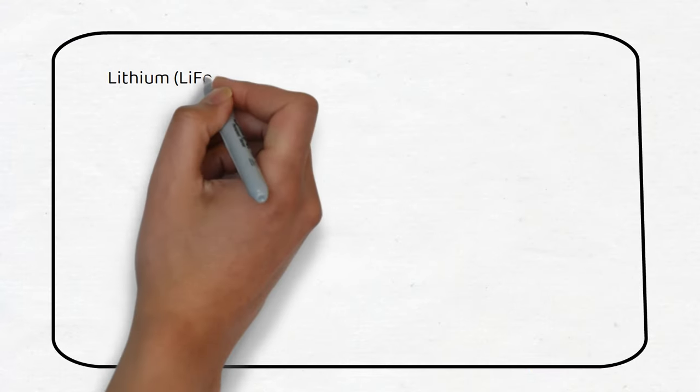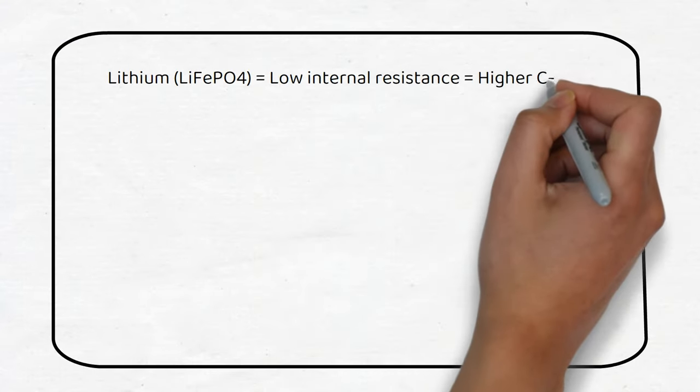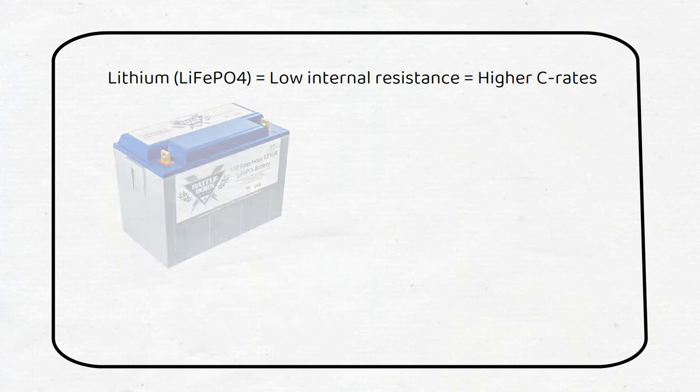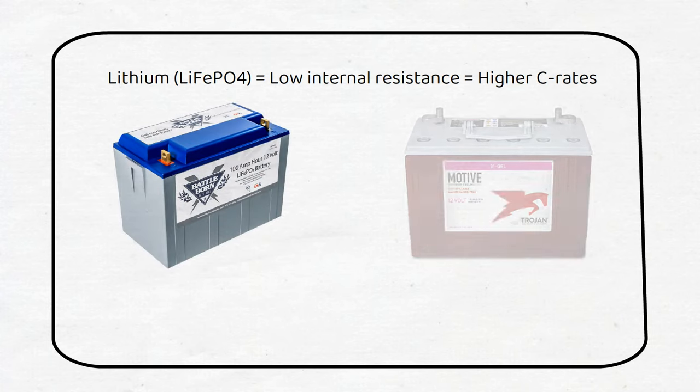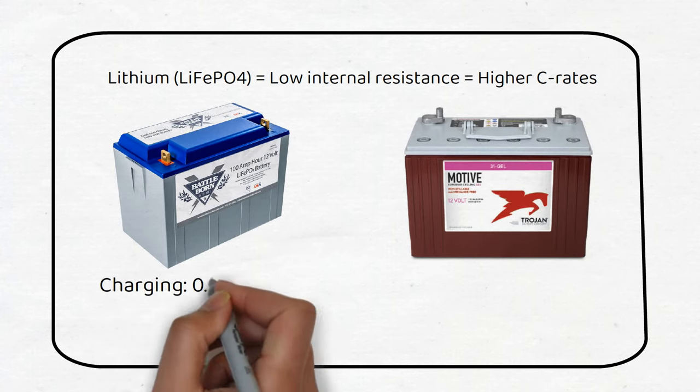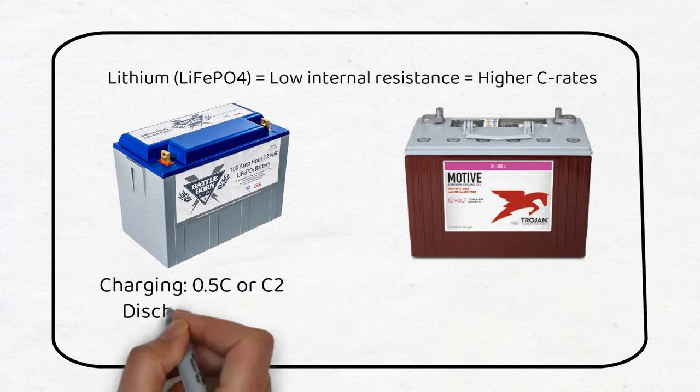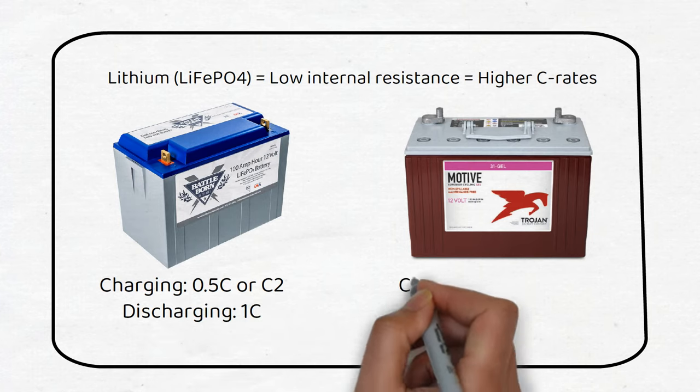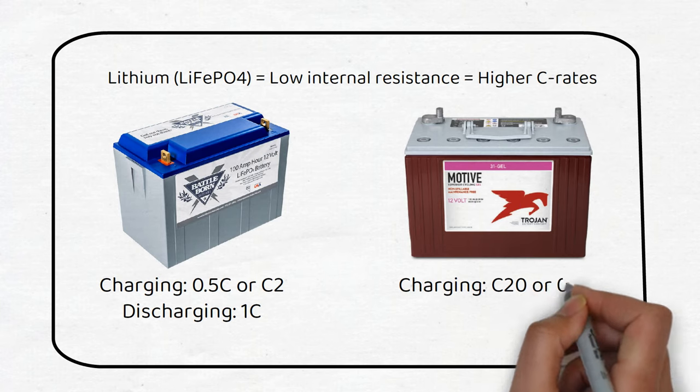Lead acid and lithium batteries have different C-Rates. Lithium is capable of higher charging and discharging current than lead acid. This is because the internal resistance in lithium batteries is very low. Let's compare two popular batteries. Battleborne lithium batteries have a charging C-Rate of 0.5C or C2 and a discharging rate of 1C. The lead acid battery has a C-Rate of C20.